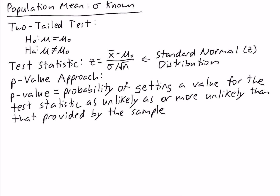What makes this the definition of the p-value for a two-tailed test is the phrase 'as unlikely as, or more unlikely.' For a lower tailed test it would say 'as small as, or smaller,' and for an upper tailed test it would say 'as large as, or larger.'